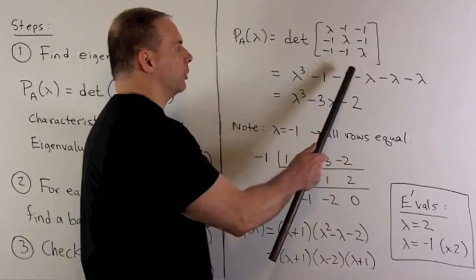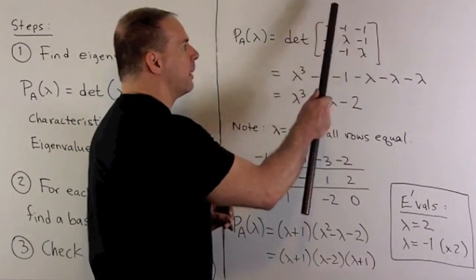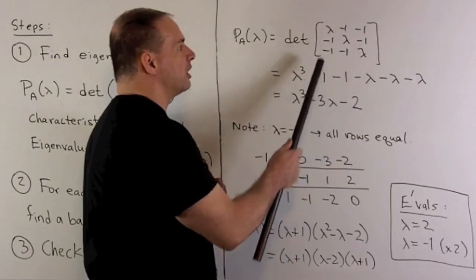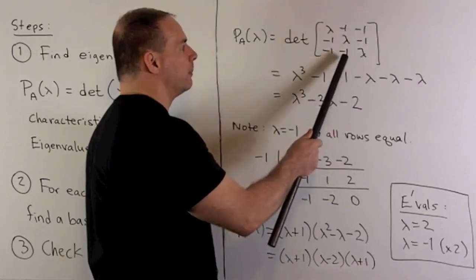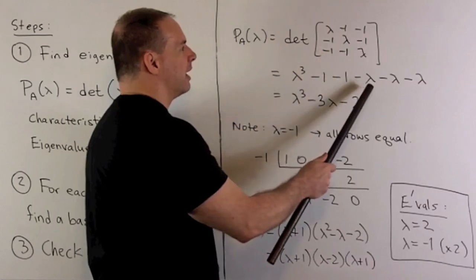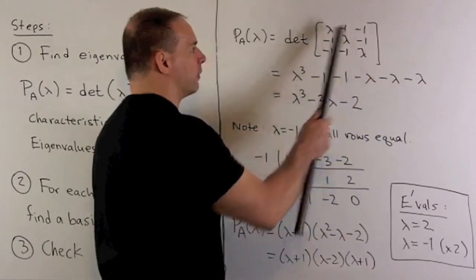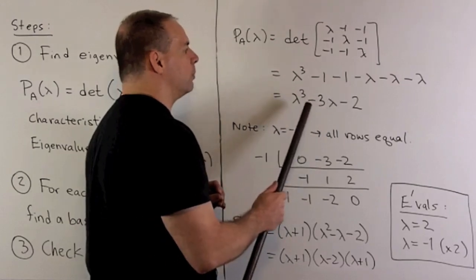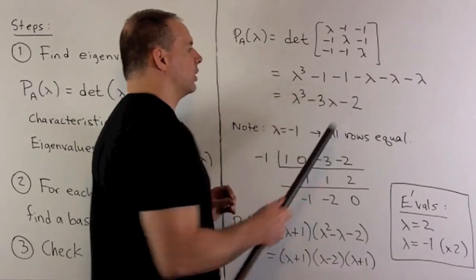So we'll have lambda cubed minus one, minus one. Going in the other direction, we're going to have lambda times one. So we get a minus lambda. Then we'll get minus lambda for the other two diagonals. So we wind up with lambda cubed minus three lambda minus two.